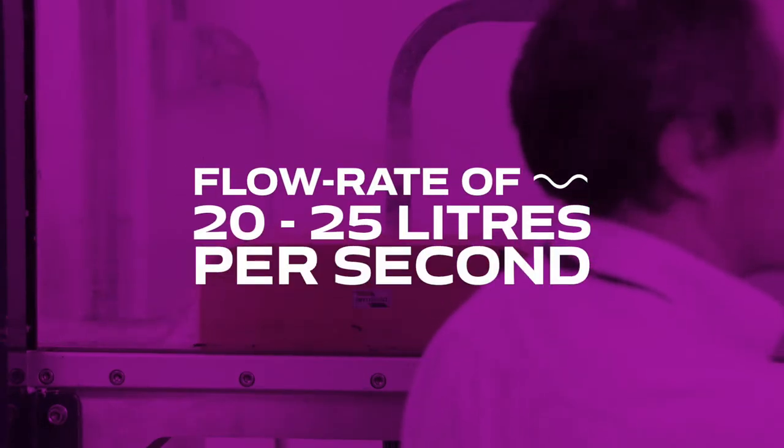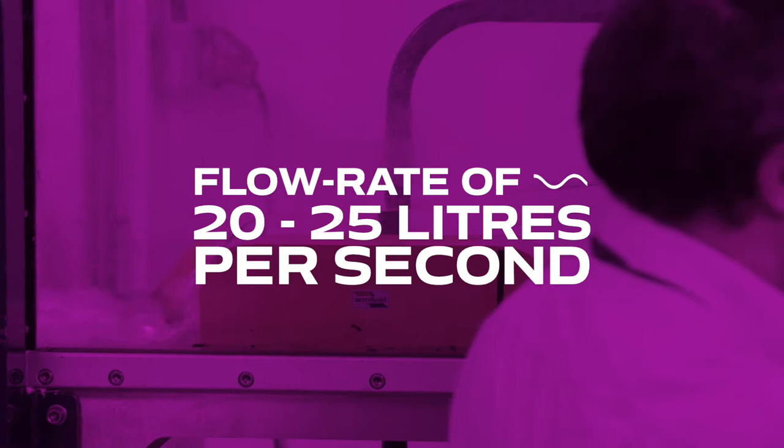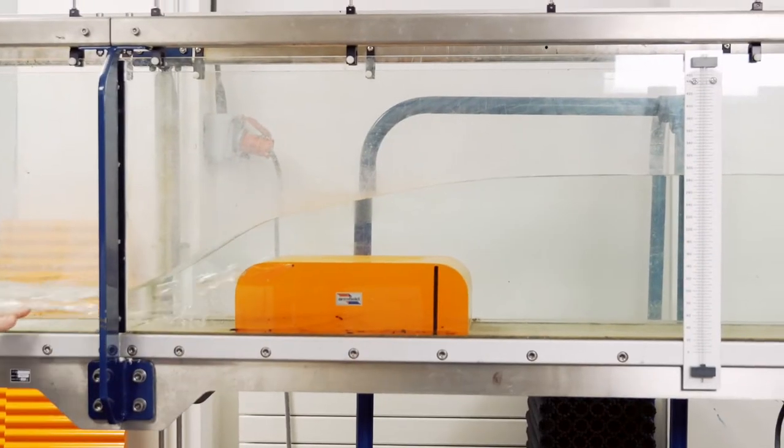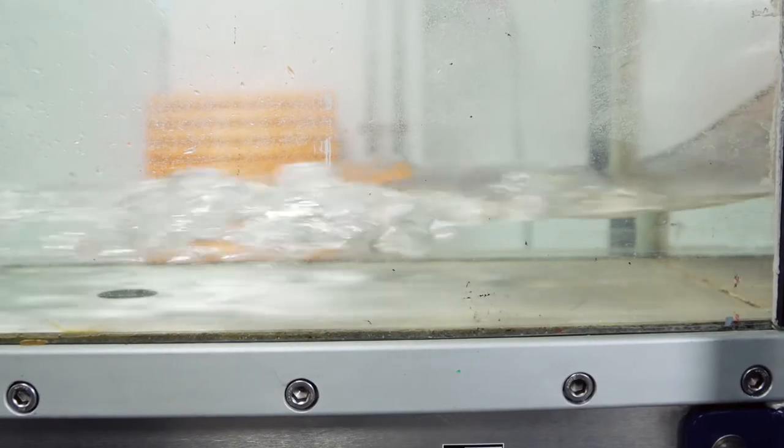We get a flow rate of something like 20 to 25 litres per second, which is pretty impressive. The flow builds up on one side, passes over the weir, and then reaches the other side.